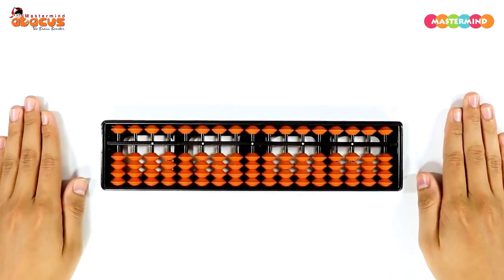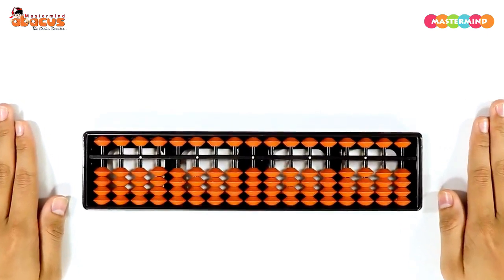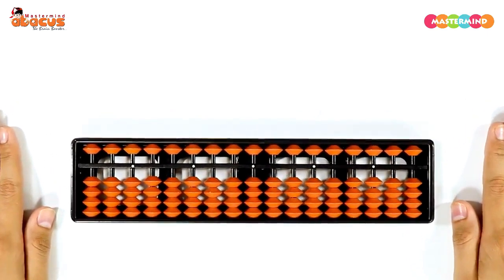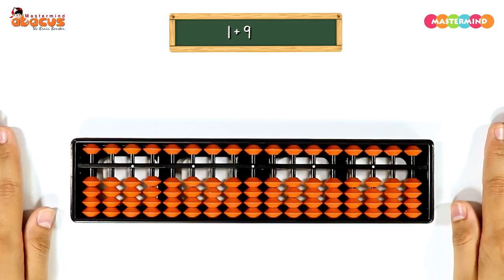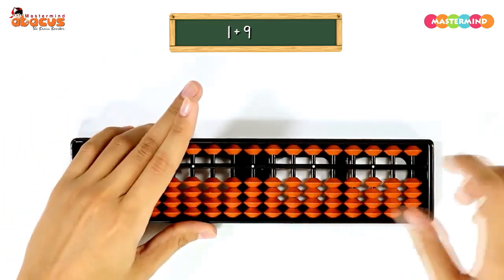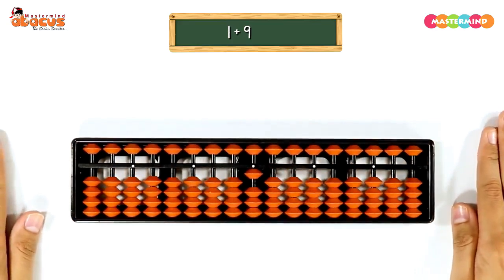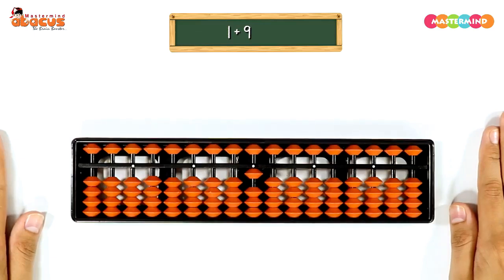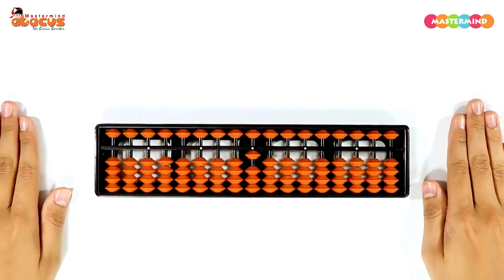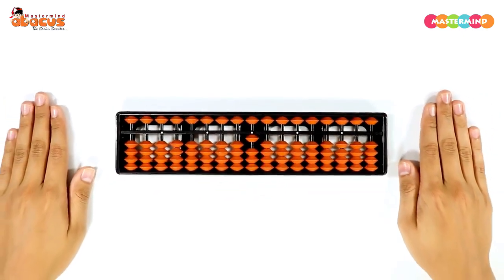For example, we need to do one add nine. So this is one on abacus. Now we need to add nine, but as we can see we do not have beads available to add nine. So we will take the help of a friend. As you can see, nine is in trouble.